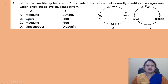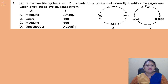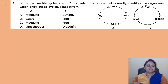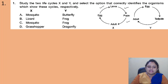Our first question: study the two life cycles X and Y and select the option that correctly identifies the organism which showed these cycles respectively. The options are: A - mosquito, butterfly; B - lizard, frog; C - mosquito, frog; D - grasshopper, dragonfly. In life cycle X, egg is converted to larva, larva to pupa, pupa to adult.